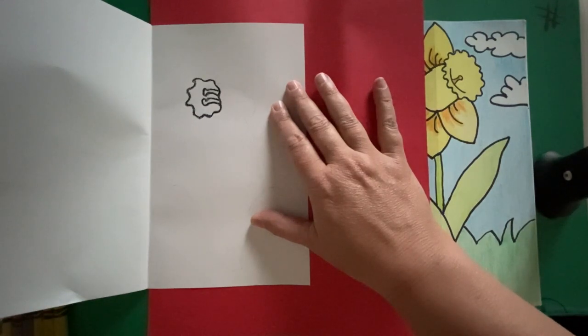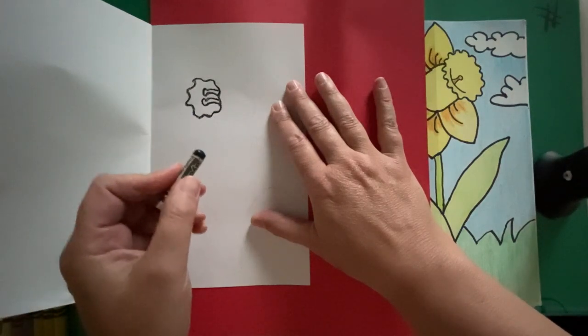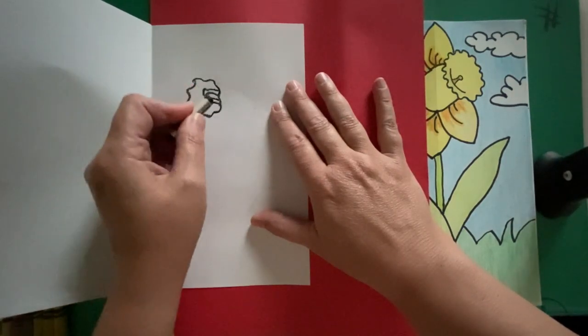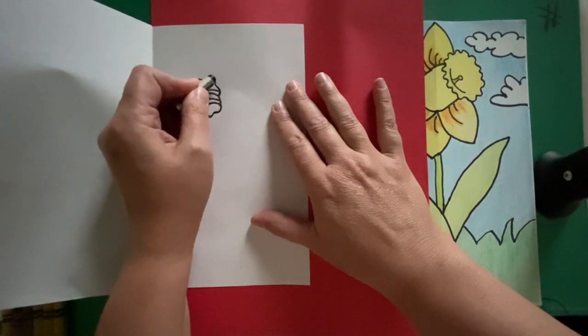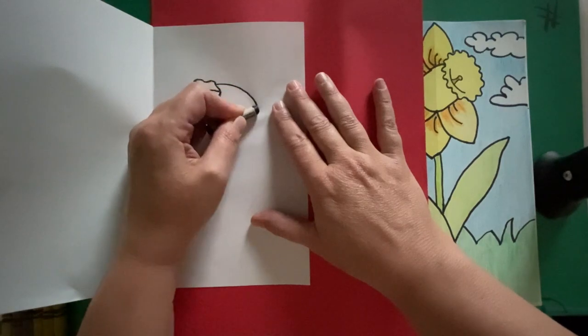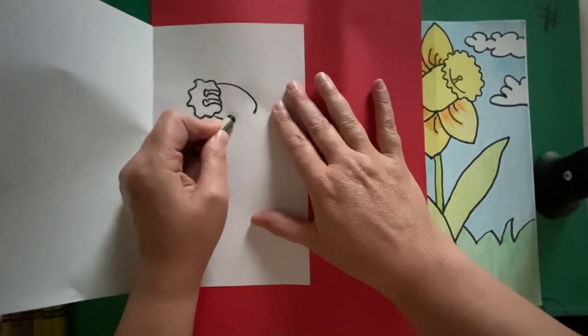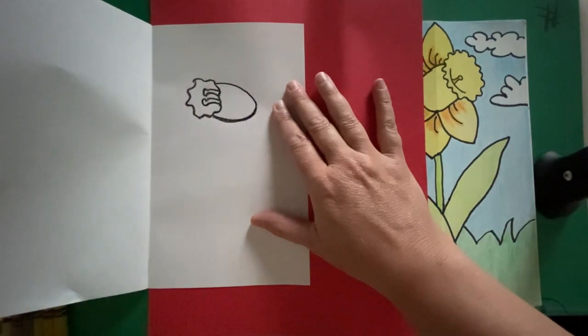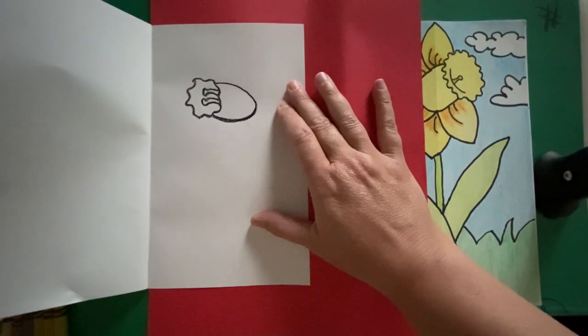Now, we're going to do a sideways letter U. That's going to give you that cup or bell shape. You want to start at the top of your circle, and then just go a sideways U. There you go.